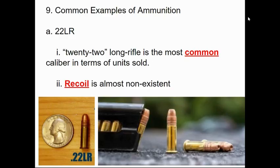A .22LR stands for .22 long rifle. The .22 is the caliber — .22 inches in diameter — and LR stands for long rifle, though that can be misleading because it doesn't have to be fired from a rifle. One of the nice things about it is it has very little recoil — when the gun pushes back, that's the recoil, and the .22LR has very little of that.